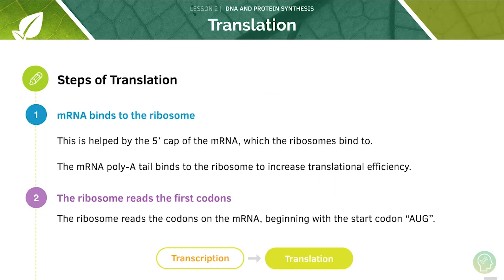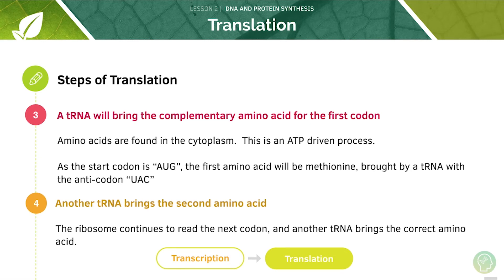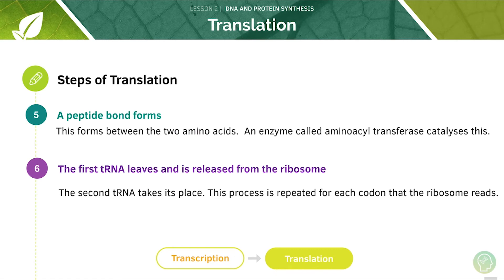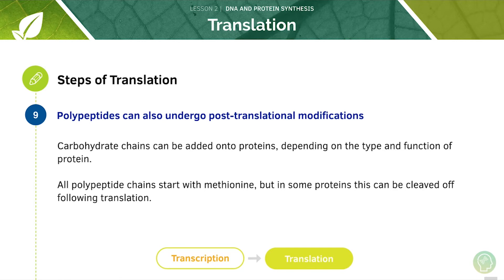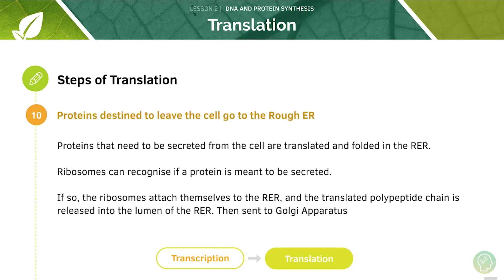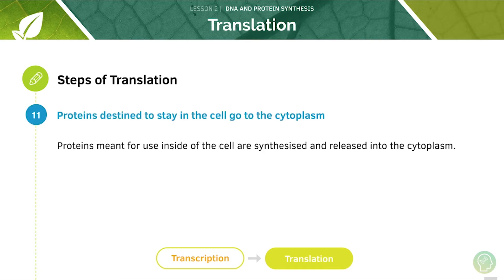Here are the steps of translation again. First, the mRNA will bind to the ribosome, which reads the first codons. Then the tRNA brings the complementary amino acid for the first codon, and a second one is brought soon after. A peptide bond forms, and the first tRNA is released from the ribosome. The ribosomes carry on until the stop codon is reached. We can then fold the polypeptide chains and modify them after translation. Finally, proteins leave to their final destinations — those leaving the cell go to the rough ER, whilst those staying in the cell go to the cytoplasm.